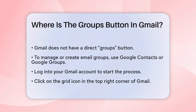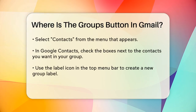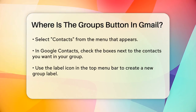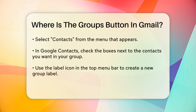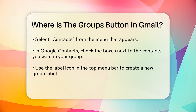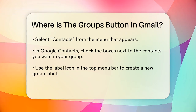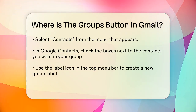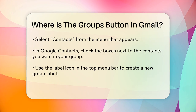To use Google Contacts, start by logging into your Gmail account. Look at the top right corner of the Gmail interface and click on the grid icon. This will open a menu where you can select Contacts.